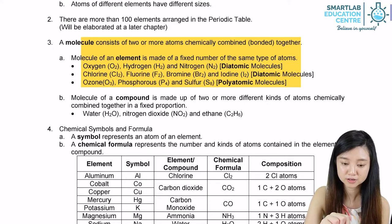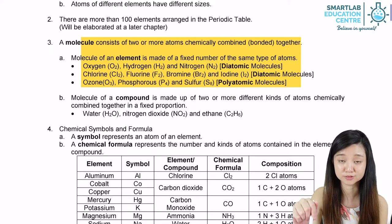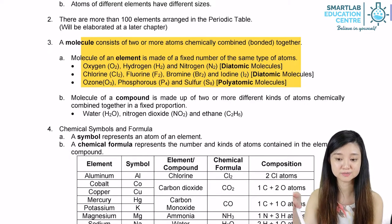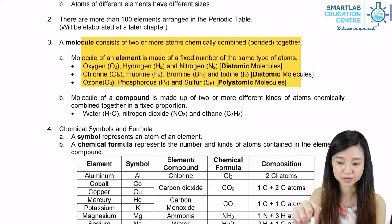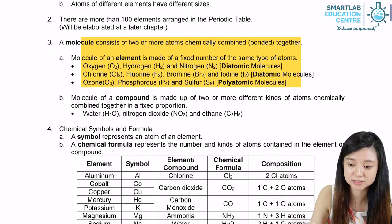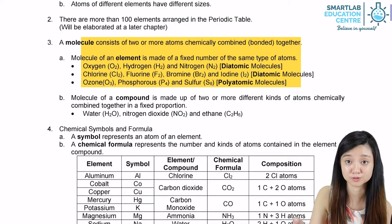Group 7 elements — chlorine, fluorine, bromine, and iodine — also consist of two of the same type of atoms chemically combined. If there are two atoms chemically combined, we call them diatomic molecules.